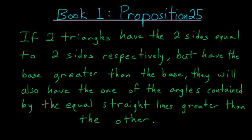For Book 1, Proposition Number 25 of Euclid's Elements: If two triangles have the two sides equal to two sides respectively, but have the base greater than the base, they will also have the one of the angles contained by the equal straight lines greater than the other.